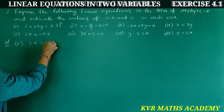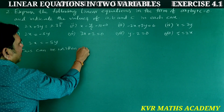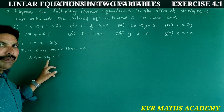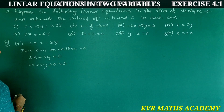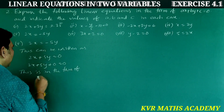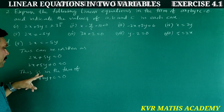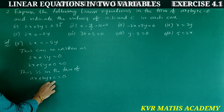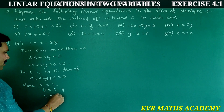Fifth: 2x = −5y. This can be written as 2x + 5y = 0, i.e., 2x + 5y + 0 = 0. Comparing with ax + by + c = 0: a = 2, b = 5, and c = 0.